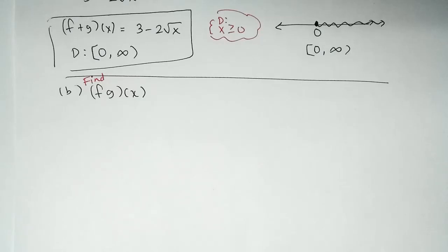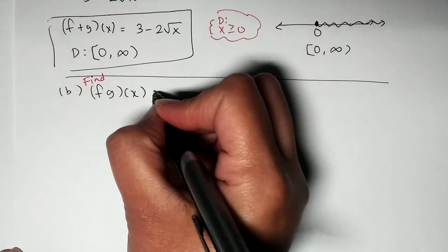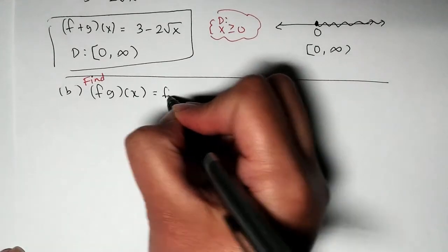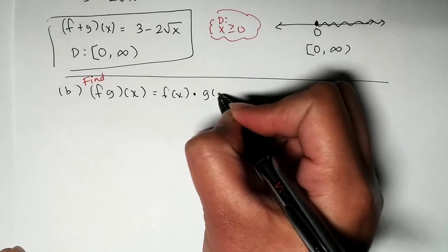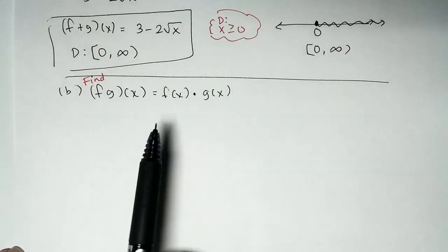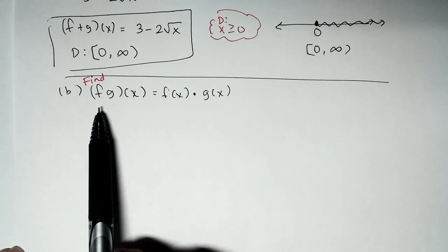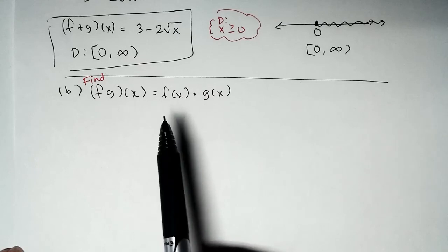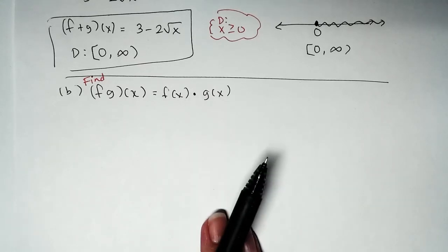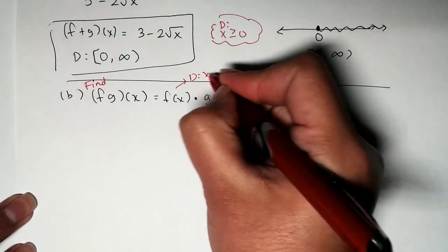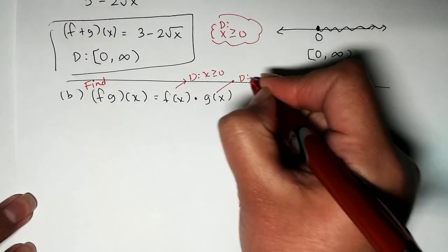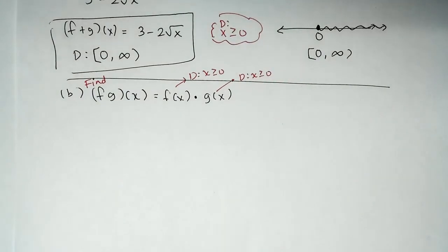Moving forward with Problem B, we are asked to find fg of x — read as f times g of x. Using the product rule for functions, we rewrite it as f of x multiplied by g of x. We are asked to find the product and then identify the domain, respecting the domain of each function. From Part A, the domain of f of x is x ≥ 0, and the domain of g of x is also x ≥ 0.